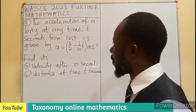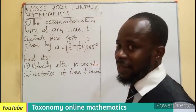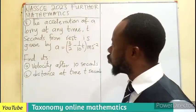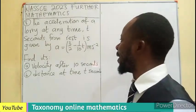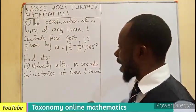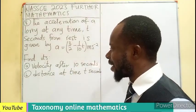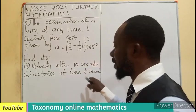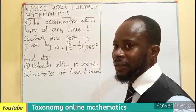The acceleration of a lorry at any time t seconds from rest is given by A equals 3 on 2 minus 1 on 10 t, which is the unit of meter per second squared. We have to find the velocity after 10 seconds and also the distance at time t seconds.